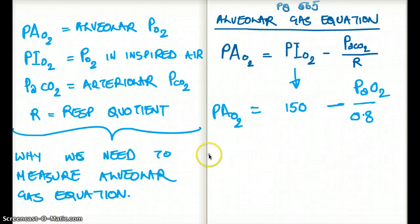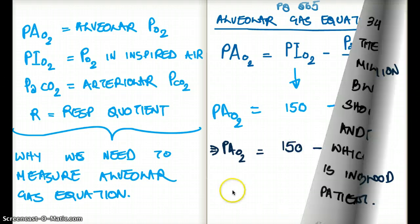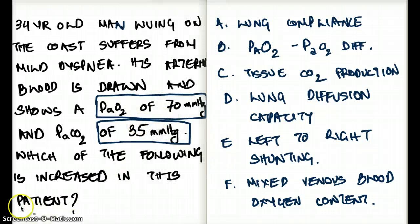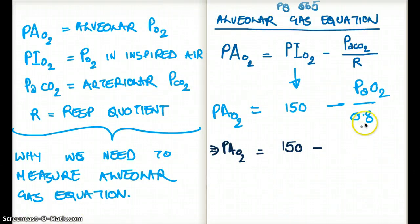So we are going to find the alveolar oxygen. P big A-O2 is going to be, usually inspired oxygen is 150, minus PaCO2 in this case. This should be PaCO2, my mistake. So the PaCO2 is going to be 35.